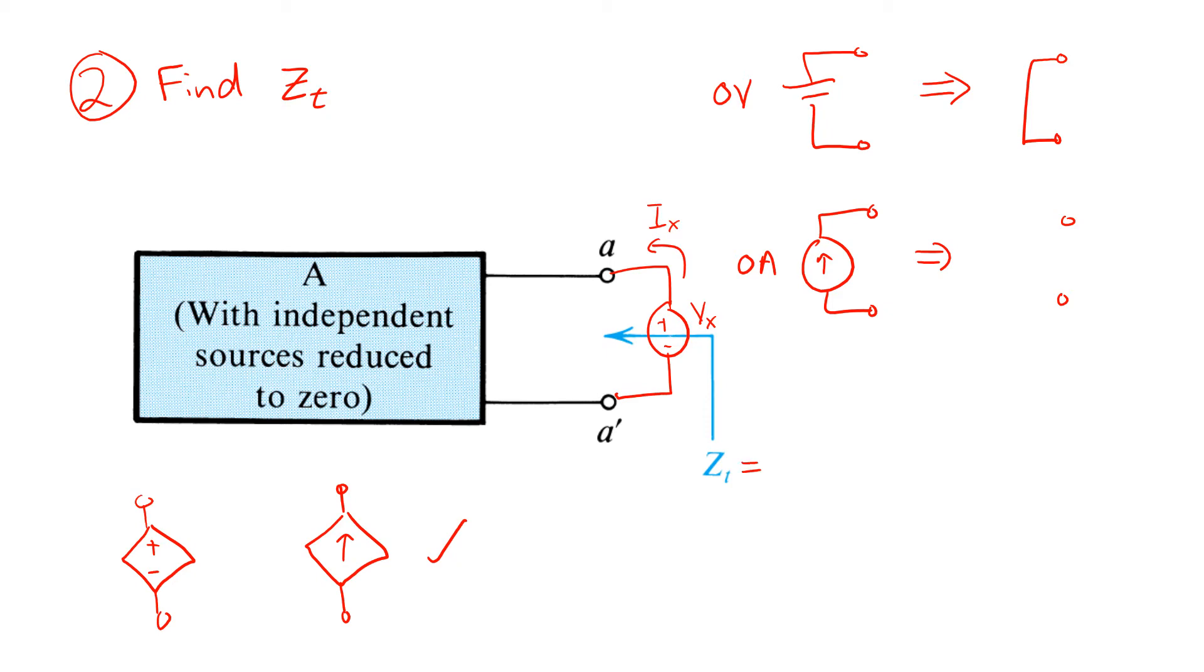Then Zt is just the ratio Vx over Ix. We can also apply a test current and find the resulting voltage. Note that in general, because Zt can be complex valued, this may have to be a phasor analysis and the result frequency dependent.